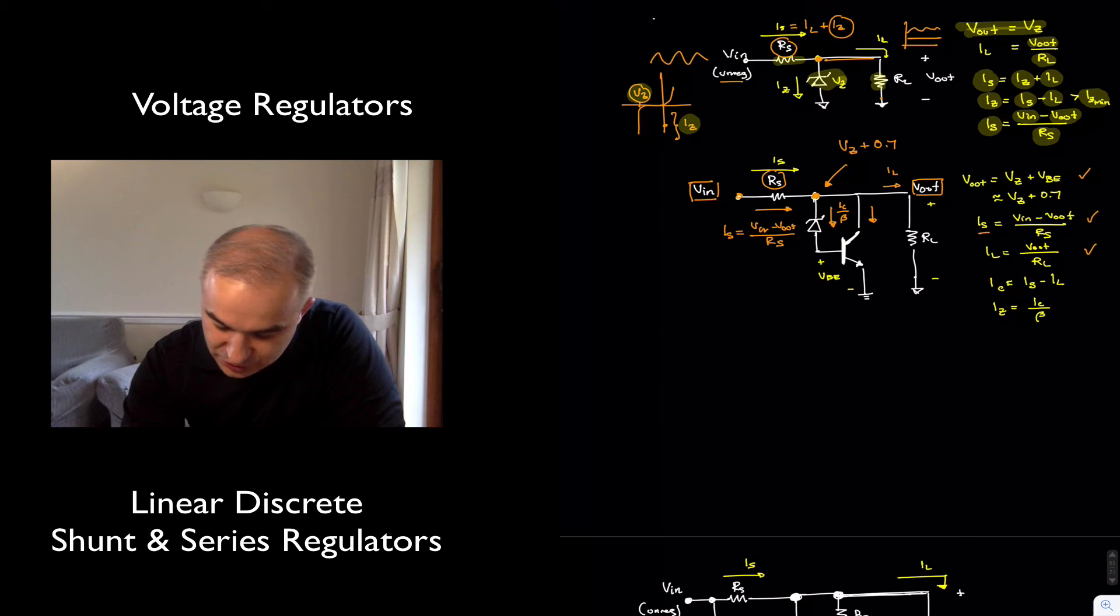And we just need to make sure, IC, the collector current, is going to be IS minus IL. This is the same that we have before.